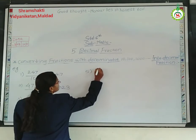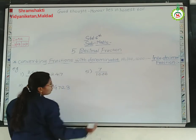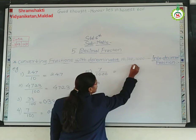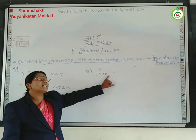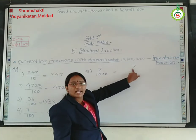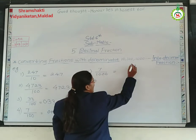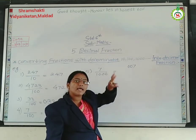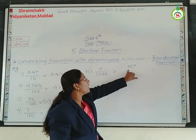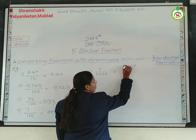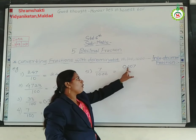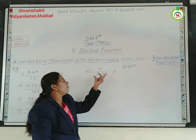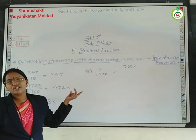Next example: 7 upon 1000. Here also write down the numerator 7 as it is. How many zeros are there? Three zeros. And we have only one digit in the numerator, so we have to add 2 zeros before 7, giving us a three-digit number — 007 — whose value remains 7. After this three-digit number, give the point here and write down 0 before the point. So we get 0.007. This decimal fraction is equivalent to 7 upon 1000.